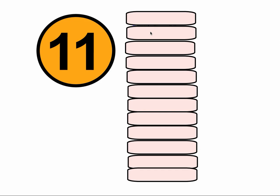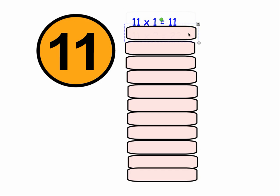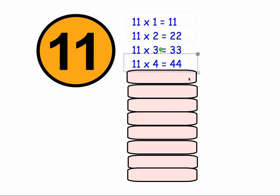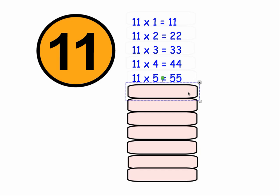In this video we're going to look at the 11 times tables. 11 times 1 equals 11, 11 times 2 equals 22, 11 times 3 equals 33, 11 times 4 equals 44, 11 times 5 equals 55.